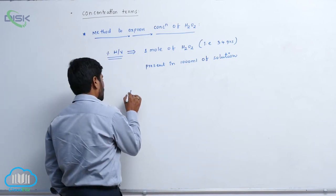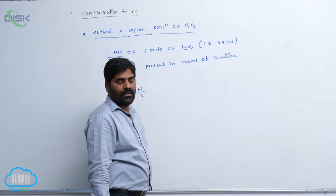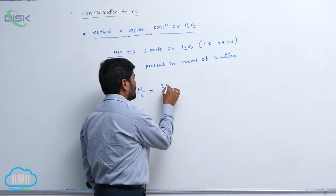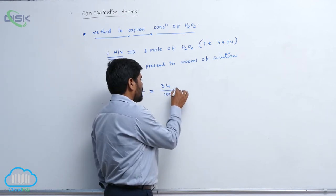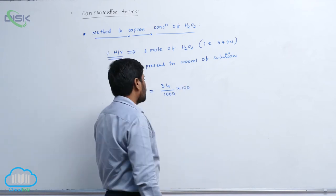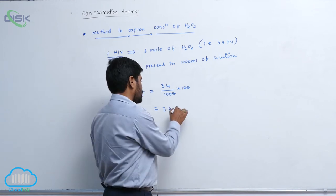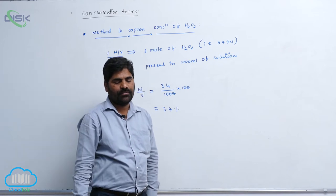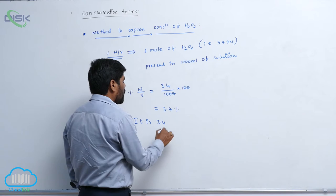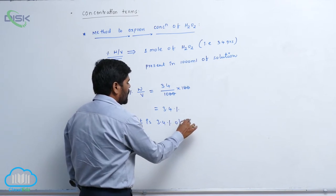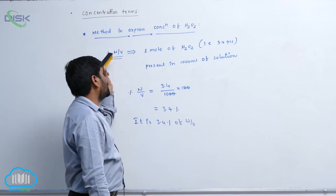So therefore, percentage w/v equals 34 grams divided by 1000, multiplied by 100. The two zeros cancel, so it becomes 3.4%. So the percentage w/v of hydrogen peroxide is 3.4%.